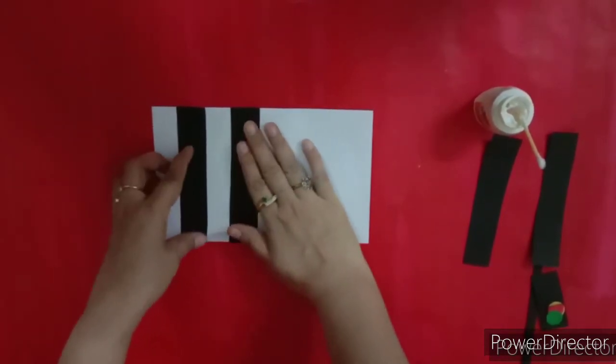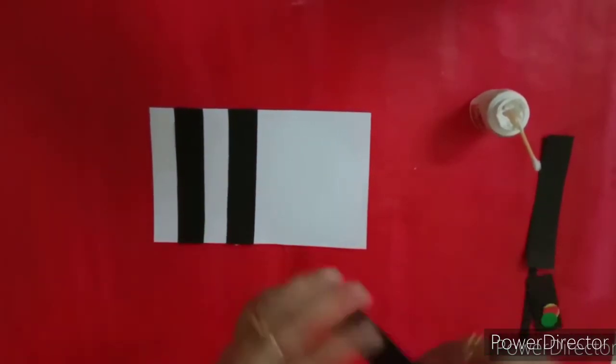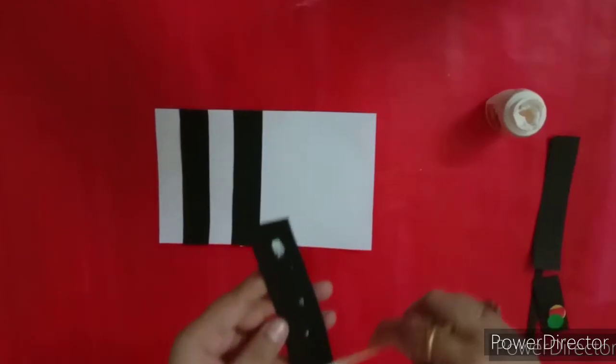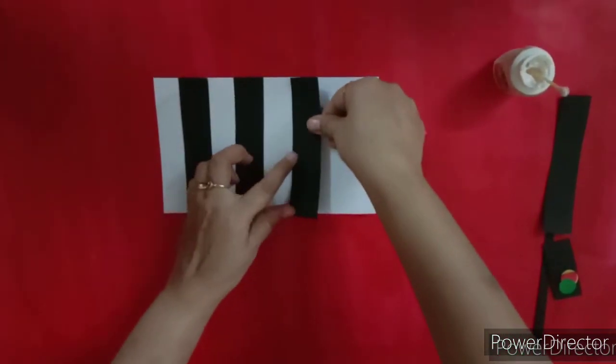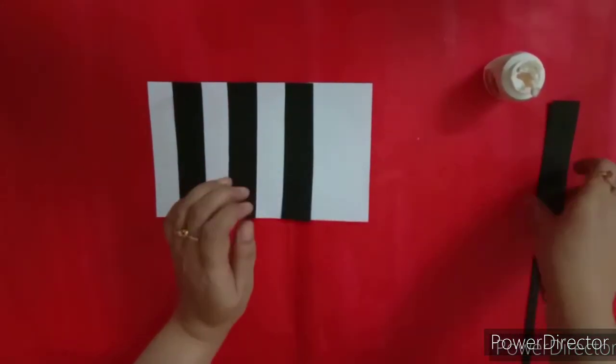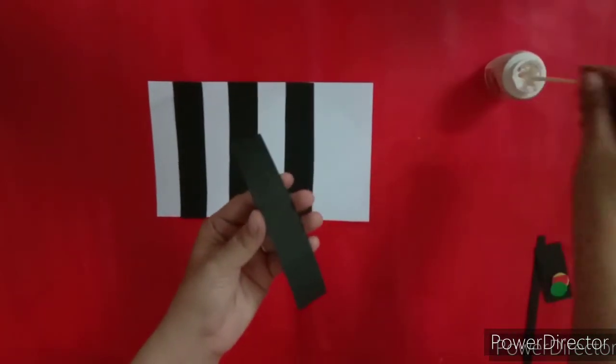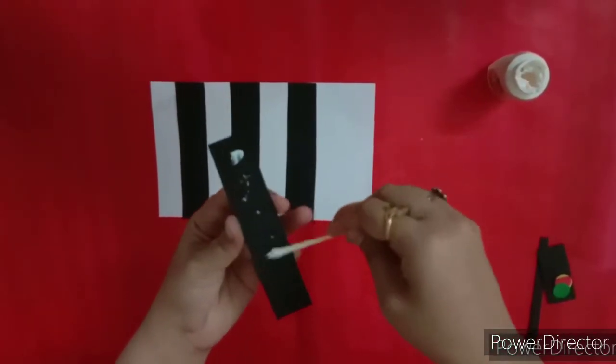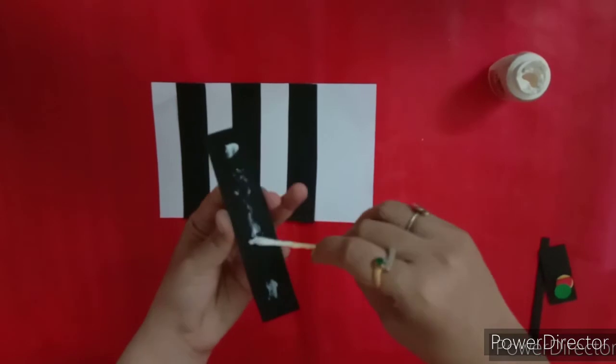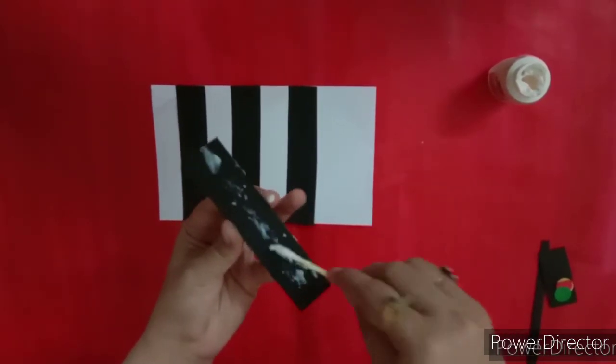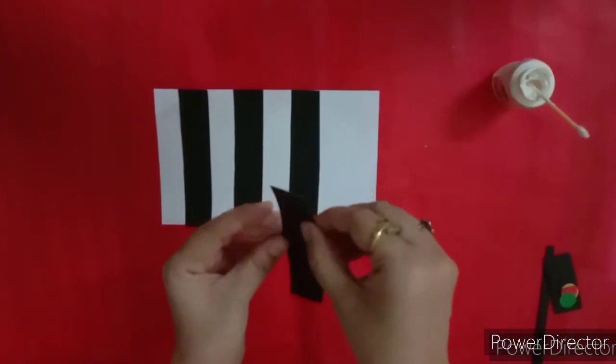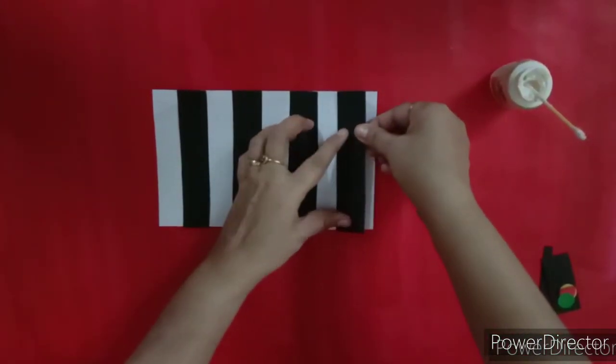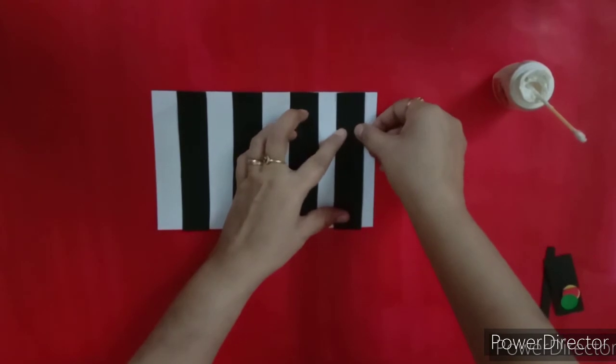Stick it like this. Now, another strip and at a distance like this. And the last one. You can take the help of your mama to cut the paper. You are not supposed to use scissors. Okay, children. So, like this.